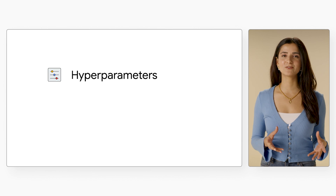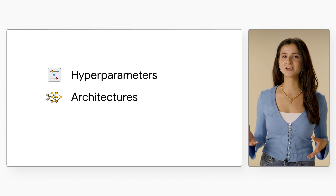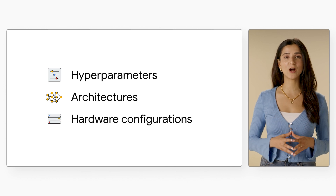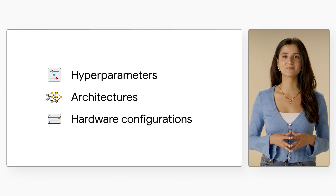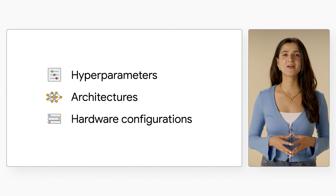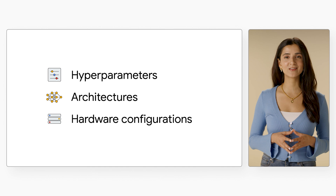Over the last episodes, we've seen how to go from notebook code to a deployed model in the cloud. But in reality, an ML workflow is rarely that linear. A huge part of the machine learning process is experimentation and tuning. You'll probably need to try out different hyperparameters, different architectures, or even different hardware configurations before you figure out what works best for your use case. So today, we'll cover a few Vertex AI features that can help you with tuning and scaling your ML models.